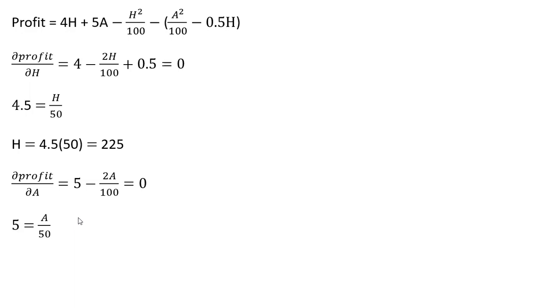Solving for A, 2 divided by 100 is 50. Moving some things around, A equals 250. So this is the efficient output of honey and apples.